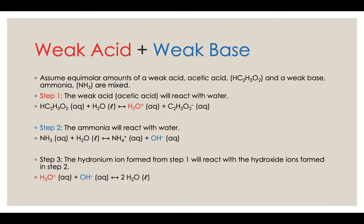So just like in those other reactions, we have to look at how each component is impacted by water. So when you put the weak acid component, acetic acid, in water, it's going to ionize and turn into some hydronium and some acetate ions. The ammonia reacts with water to make some ammonium ions and some hydroxide. And then the hydronium ions from step one and the hydroxide ions from step two can react with one another to make water.